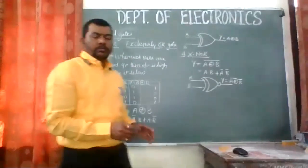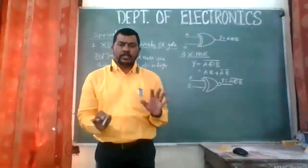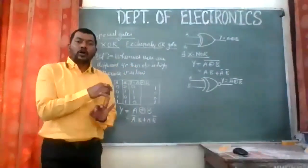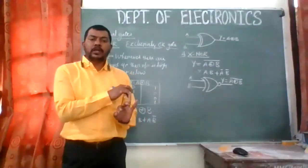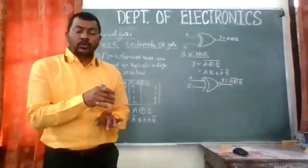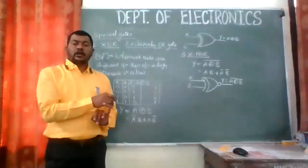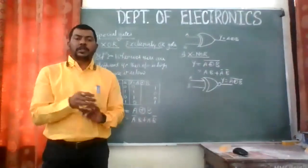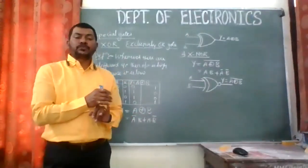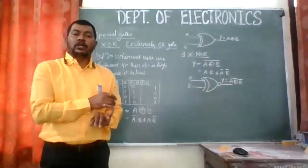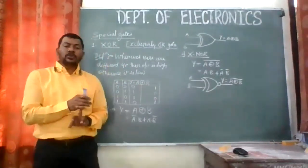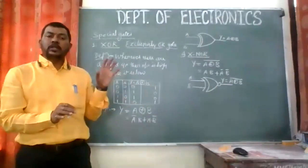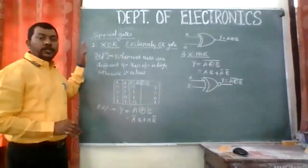So we have learned 7 gates in total. The first was AND gate — if first and second inputs are both high, output is high; otherwise low. OR gate — if first or second or both inputs are high, output is high; otherwise low. Third gate is NOT gate — the output is the complement of the input. NAND gate, the first universal gate — AND plus NOT gives NAND; if both inputs are high, output is low; otherwise high. NOR gate — if first or second or both inputs are high, output is low; otherwise high. Today we completed 2 special gates.